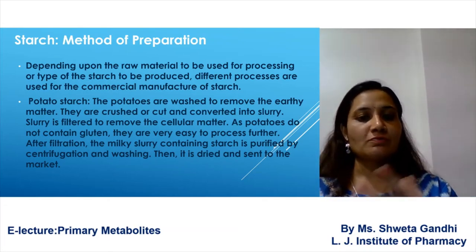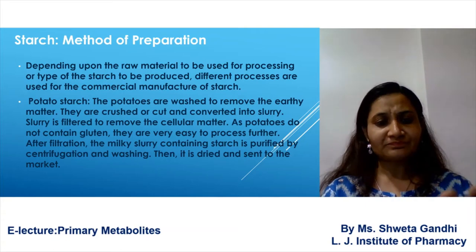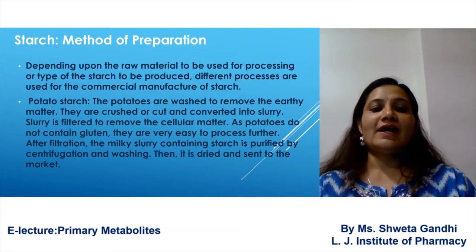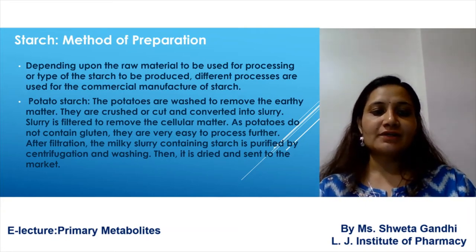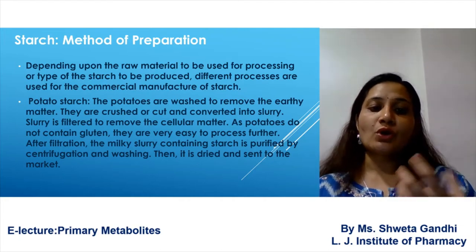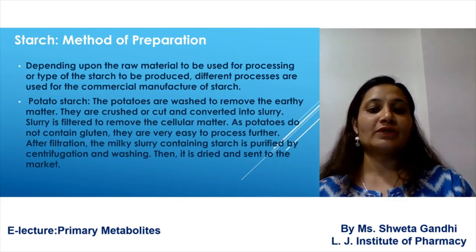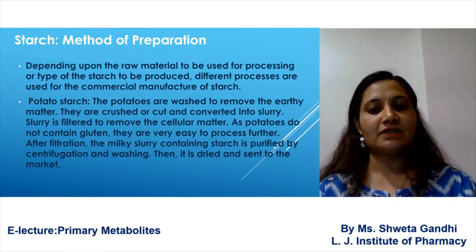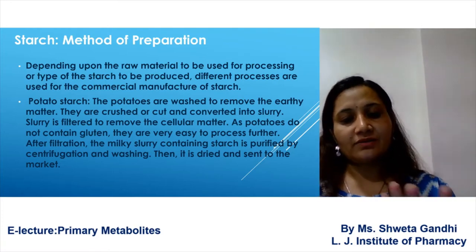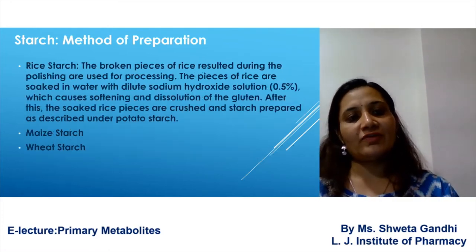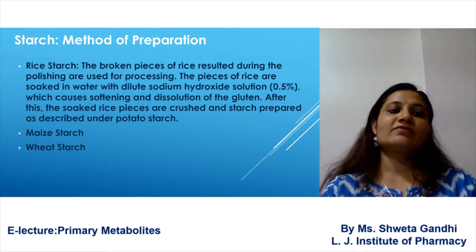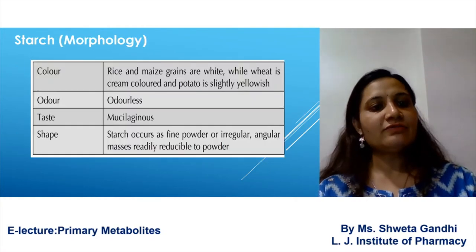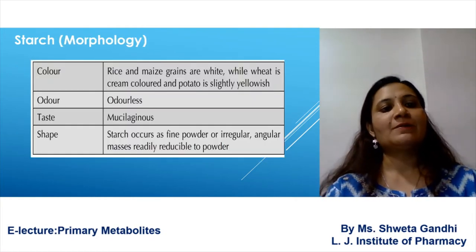For the method of preparation of starch — for example potato starch — the potatoes are washed to remove earthy matter and foreign impurities, then crushed, filtered, and since potatoes do not contain gluten they are easy to process. After filtration, a slurry is made, then dried to obtain starch. Similarly, rice starch, maize starch, and wheat starch can be prepared.